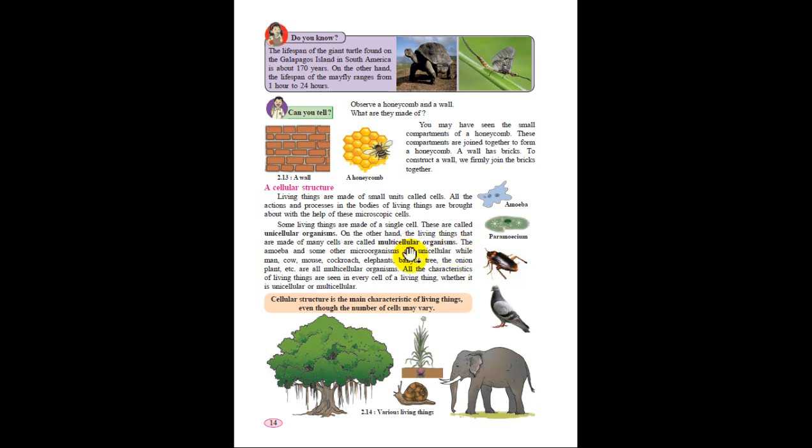We are multicellular organisms. Unicellular examples are amoeba and paramecium. These are made up of only one cell. Amoeba and some other organisms are unicellular, while man, cow, house, cockroach, elephants, banyan tree, onion plant, etc. are made up of multicellular structure.